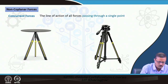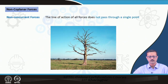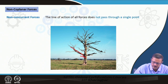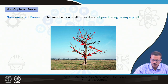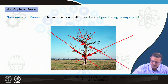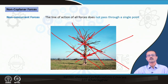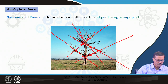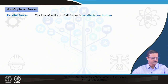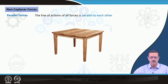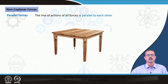Non-coplanar non-concurrent forces: consider a tree with branches. Forces at various branches are in different locations, definitely not in the same plane, and also not passing through the same point — they have different lines of action. That is a non-coplanar, non-concurrent force system. Finally, non-coplanar parallel forces: using the same table example, the four leg forces are parallel but not in the same plane.